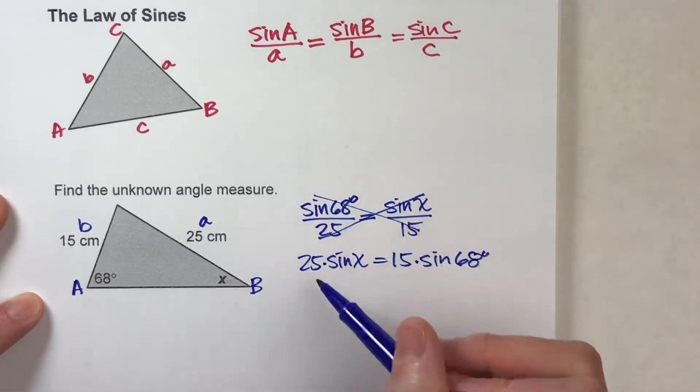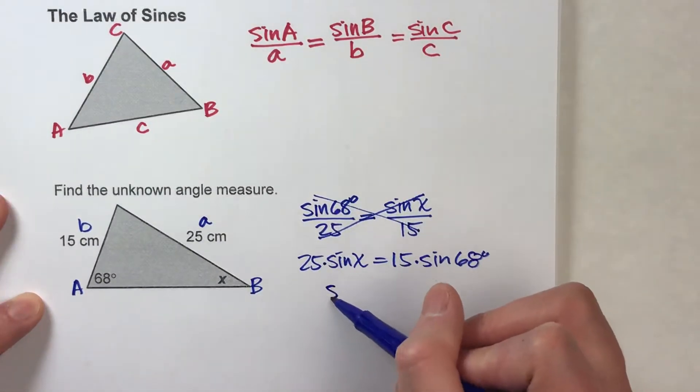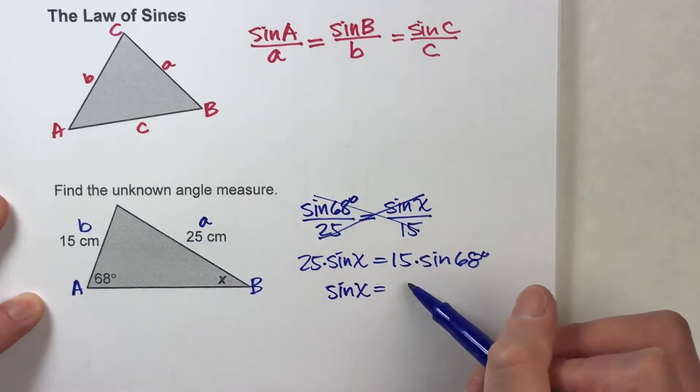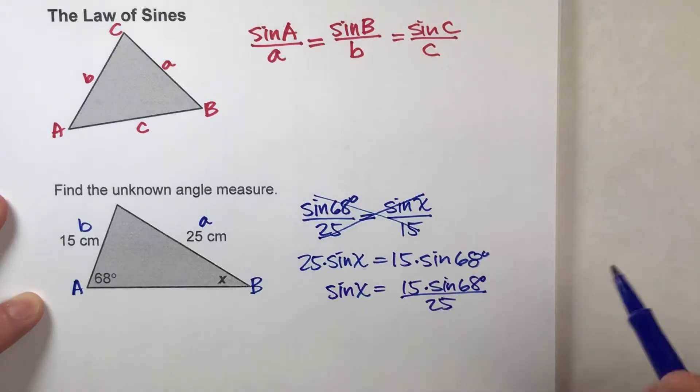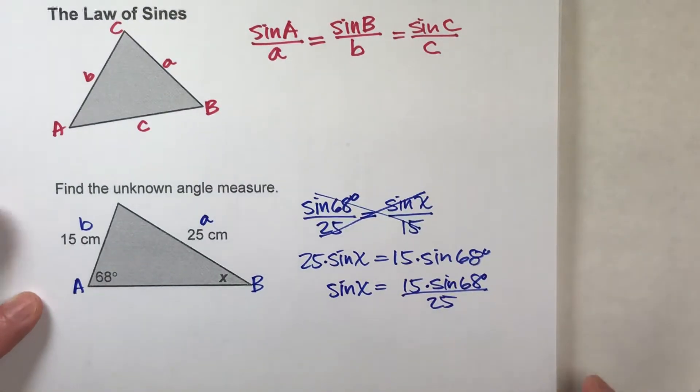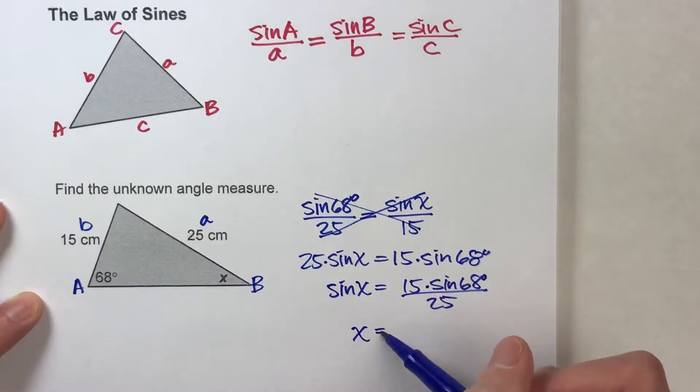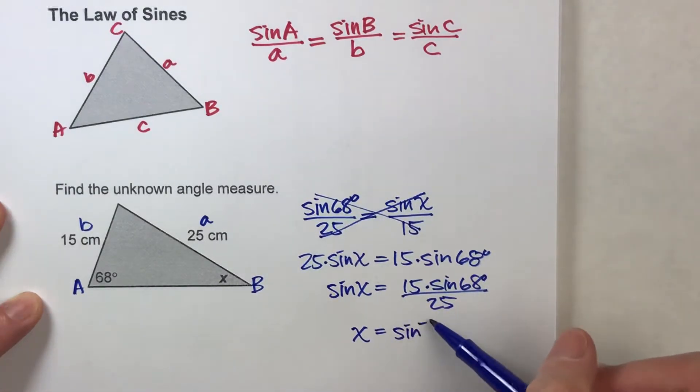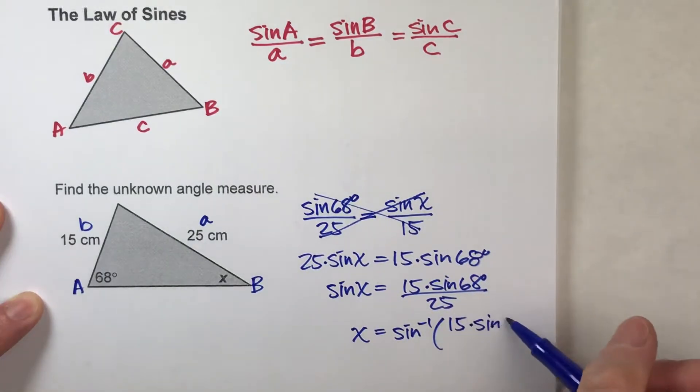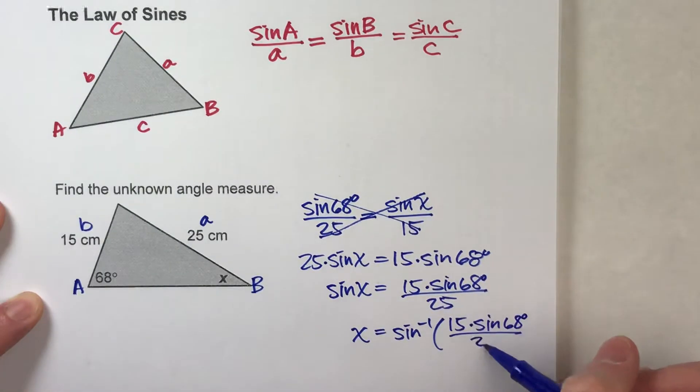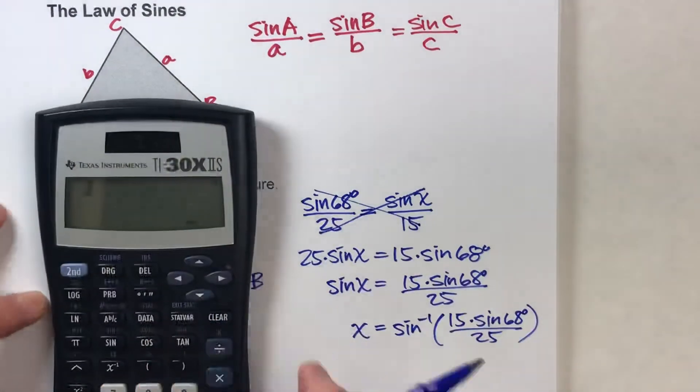We want to get x by itself, so I'm going to divide both sides by 25. So, I'm going to be left with this side divided by 25. And now, it says the sine of x, we need x, which means x will be the inverse sine of this whole side over here. Which is a lot of stuff, but luckily we have calculators to do that for us. So, let's do that.